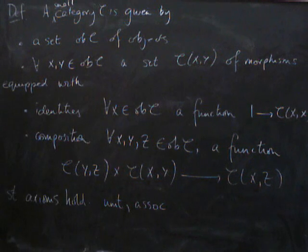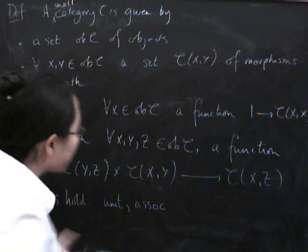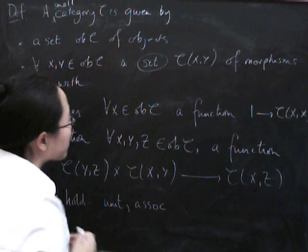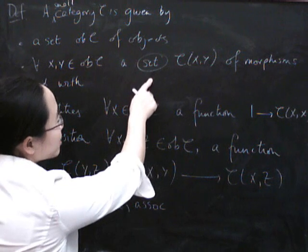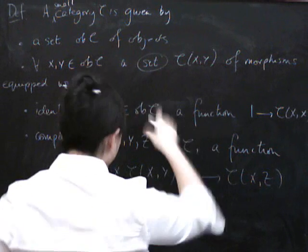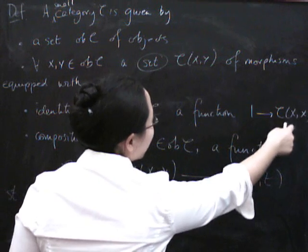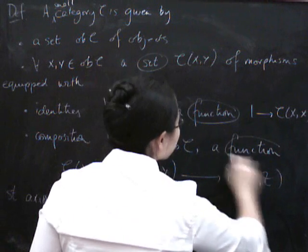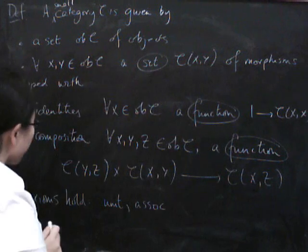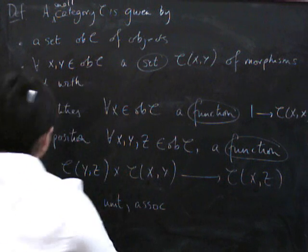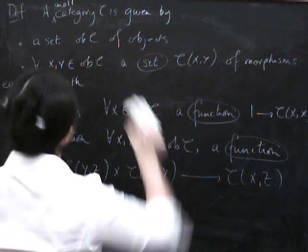So what are we going to do to make this into a two-category? We're going to categorify it, which means we're going to take this set of morphisms and turn it into a category. If that turns into a category, then some things are going to turn into functors — because if this is a category and this is a category, then the identity and composition maps are going to have to be functors. And then we're going to keep the same axioms.